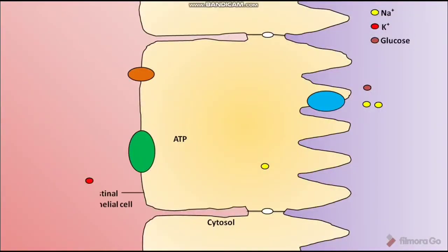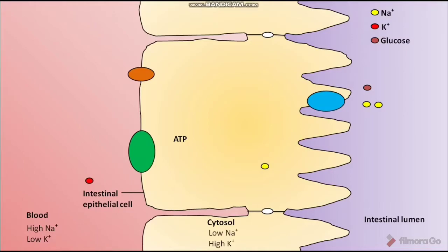This is an intestinal epithelial cell present between blood and intestinal lumen. The blood has high Na+ ion concentration and low K+ ion concentration. The cytosol of the intestinal epithelial cell has low Na+ ion concentration and high K+ ion concentration. The intestinal lumen has dietary glucose and high dietary Na+ ion and Cl- ion concentrations.